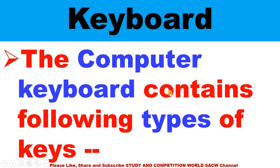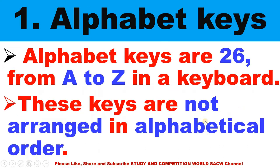The computer keyboard contains the following types of keys. First, alphabet keys. Alphabet keys are 26, from A to Z on a keyboard. In childhood you have read about alphabets A, B, C, D, E, F — there are 26. These are called alphabet keys.